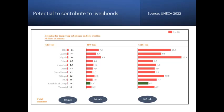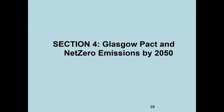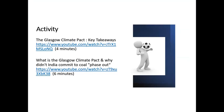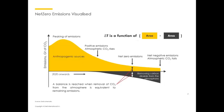Let's move on to Section 4, the Glasgow Climate Pact and net zero emissions by 2050. You can watch the four-minute Glasgow Climate Pact clip and the six-minute clip on what is the Glasgow Climate Pact and why didn't India commit. One key outcome from the Glasgow Climate Pact is the net zero vision — visualizing net zero emissions by 2050 — where around 2025 emissions need to peak, and by 2050, the carbon dioxide being removed from the atmosphere should equal what is being emitted.